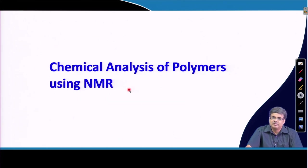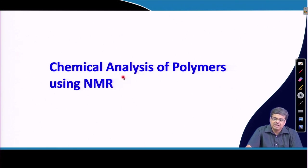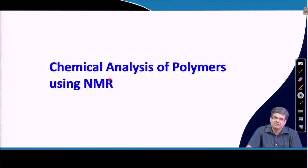Next, I will move to the chemical analysis of polymers using NMR. There are other spectroscopic techniques like UV-visible and infrared spectroscopy which can be used for chemical analysis, but NMR is much more practical and useful because IR and UV-visible spectra are very limited — restricted to determining the functional groups or chromophores present in the polymer molecule.